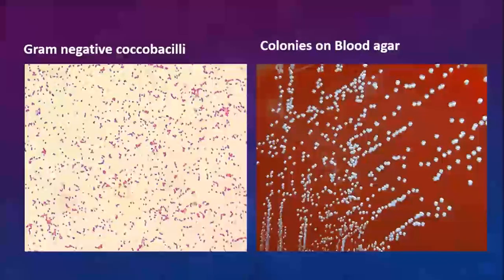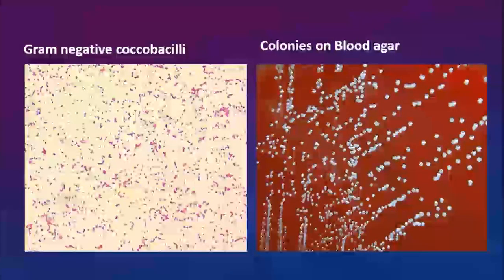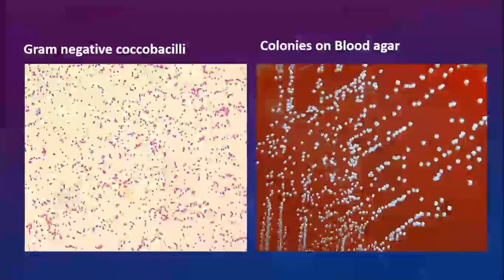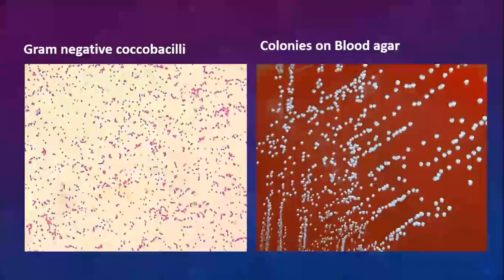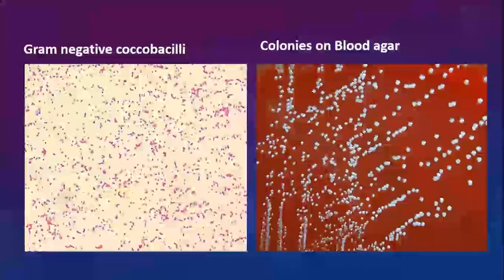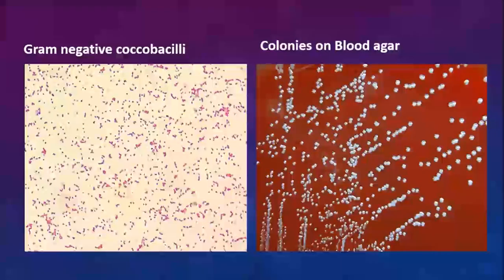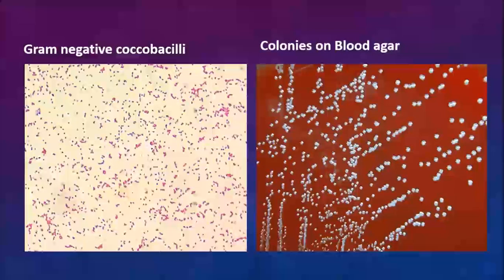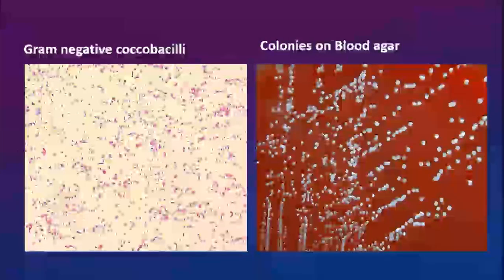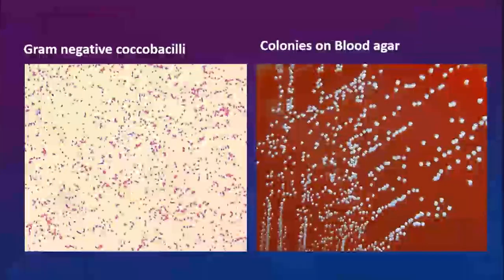Here you see gram-negative cocobacilli. On the right you see white, spherical, convex, smooth colonies on blood agar.